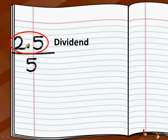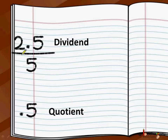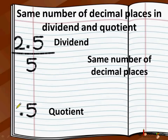In the dividend, there is one decimal place — the decimal point is there with one digit following it. So the result is also going to have one decimal place. We did 25 divided by 5 and got 5, so we add a decimal point so that there is one decimal place in the result — the quotient. The answer is 0.5, meaning each part will have 0.5 liters if we divide 2.5 liters of milk into 5 equal parts.